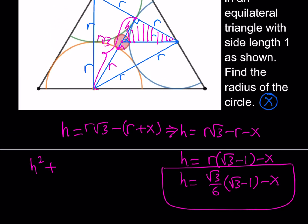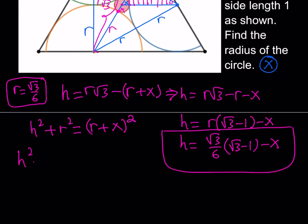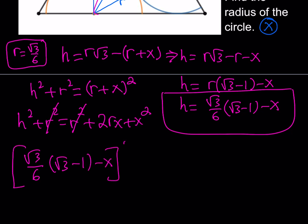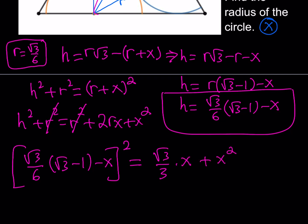So h² + r² = (r + x)². Expanding the right side and noting that r² cancels from both sides, I can substitute h = √3/6·(√3 − 1) − x and expand. The left side becomes [√3/6·(√3 − 1) − x]², and the right side expands to 2rx + x². What's really interesting is that we get another x² on both sides, which cancels out, so we don't have to deal with a quadratic equation.